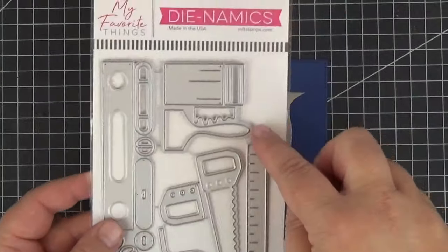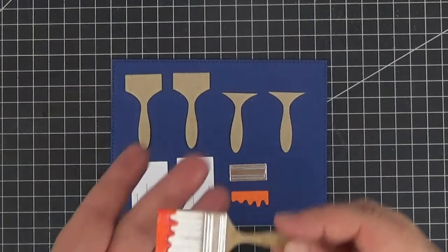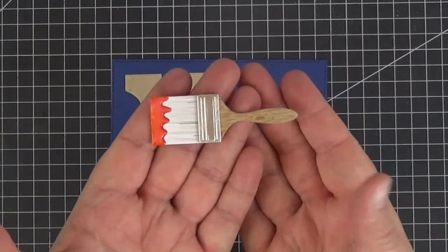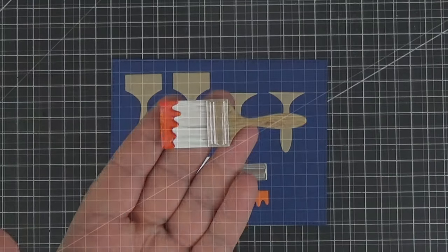The paint brushes are from the In the Toolbox set one dynamics. Here are all of the pieces that I used for each brush and this is what it looks like after assembling, shading and glossy accents. Isn't that cute?